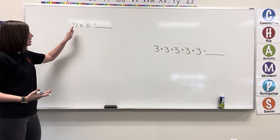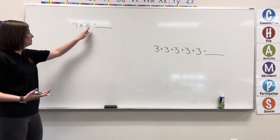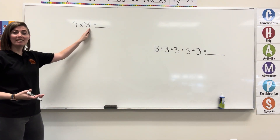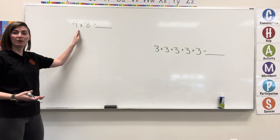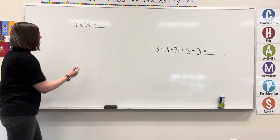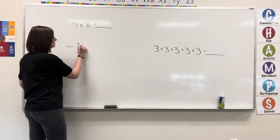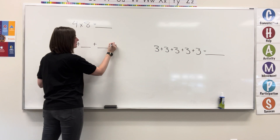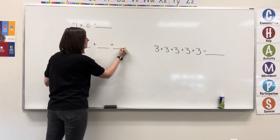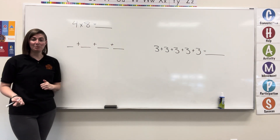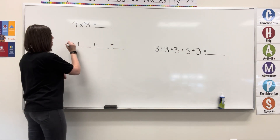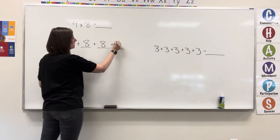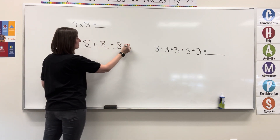So, 4 times 8 can be thought of as adding 8 four times. I'm going to have 1, 2, 3, 4 times that 8 is being added. So, 8 plus 8 plus 8 plus 8.